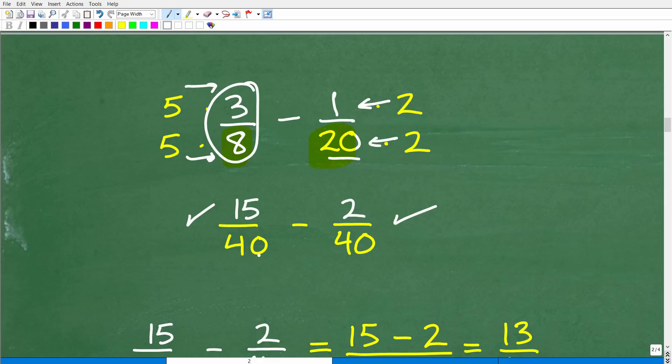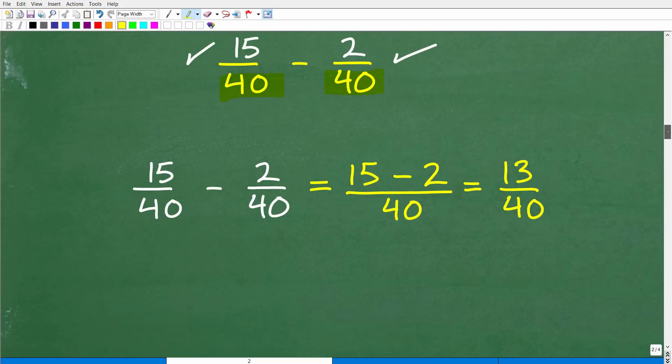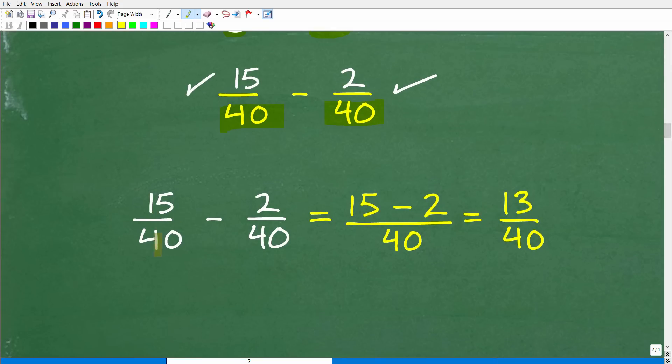Alright, so here now we finally have two fractions, and the denominators are the same. So, now we can finally subtract these fractions. So, 15 over 40, minus 2 over 40, they have the same denominator. So, we're going to write that once, and subtract the numerators, 15 minus 2, which of course is going to be 13, or 13 over 40. And there you go. And that is the final answer, and it's fully simplified.